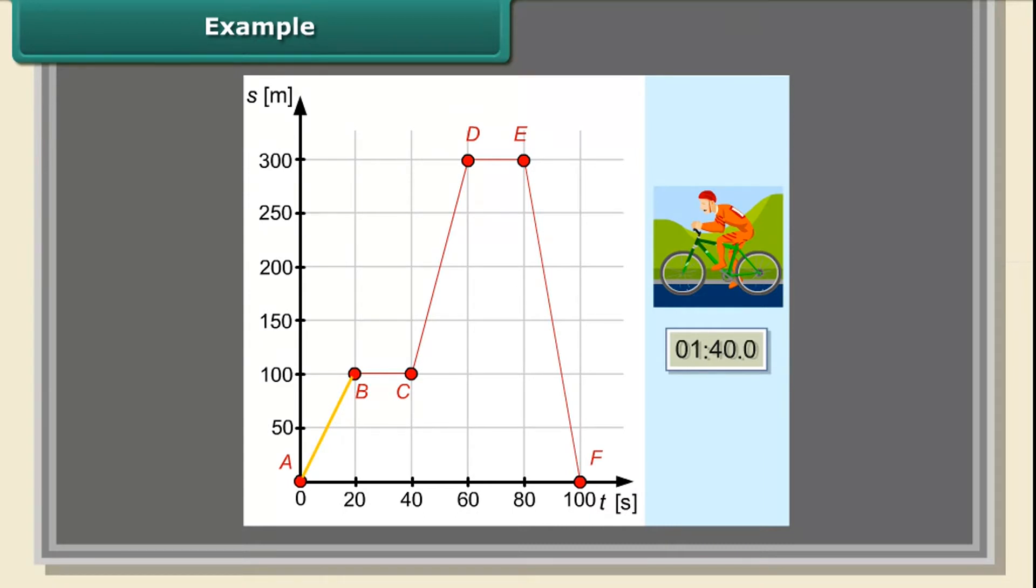From segment AB, we can discover that the cyclist covered the distance of 100 meters in 20 seconds, moving at a constant speed of 5 meters per second.